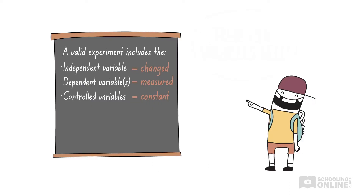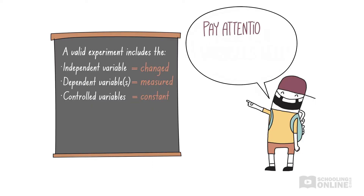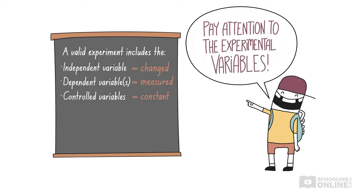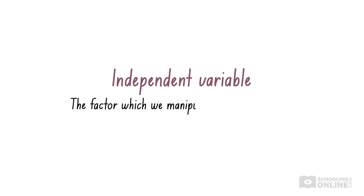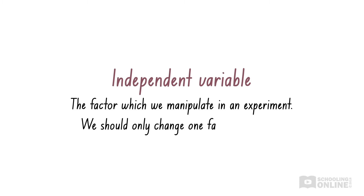To avoid similar issues in our science experiments, we need to pay close attention to the independent, dependent, and controlled variables. This will allow us to draw valid conclusions from our data. The independent variable is the factor which we manipulate or change in an experiment. For an experiment to be valid, we should only change one factor at a time. That way, we can conclude that any differences in our results are solely due to changes in the independent variable, and not other factors.